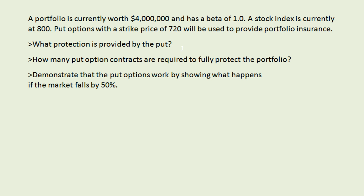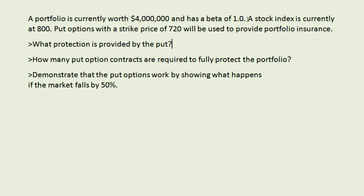The first question being asked is: what protection is provided by the put? The idea is that a put option will work in the opposite direction as the market. So as the market falls, the value of the stock index will fall and a put option on that index will rise. Since we have a portfolio with a beta of one, that means our portfolio moves with the same volatility as the market. Beta is a measure of volatility with respect to the market.